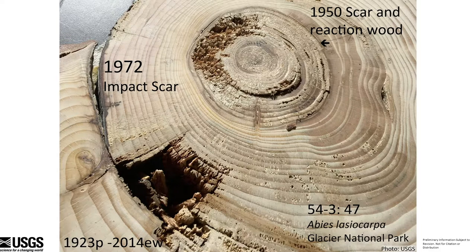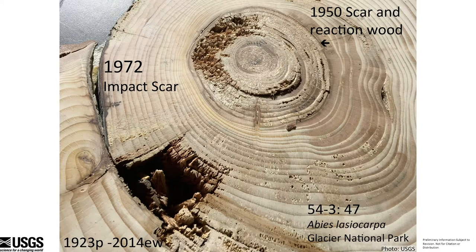The 1972 impact scar is a class one — we changed things up a little bit. A class one scar is a really good scar; that's the sort of signal we'd love to find in all of our trees. Unfortunately we don't, so we have to downgrade some other signals. In 1950, there's a really small scar, but then we have something called reaction wood. That 1950 scar could even be a moose walking along and scratching against the tree, bending it over, then moving along — so maybe it was a moose, maybe it was something else, maybe it was an avalanche.